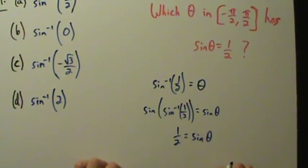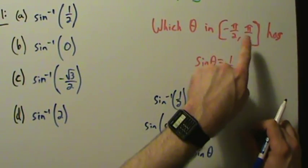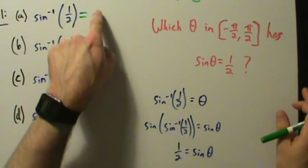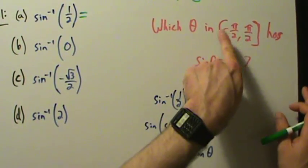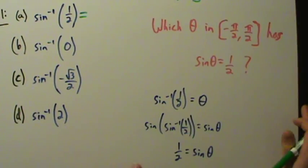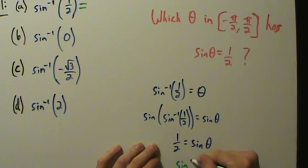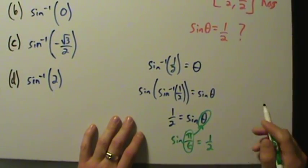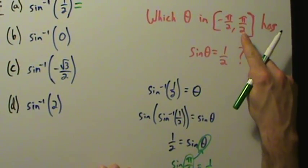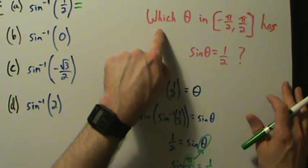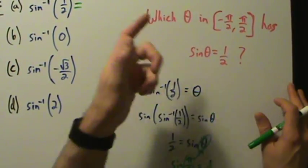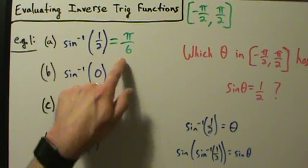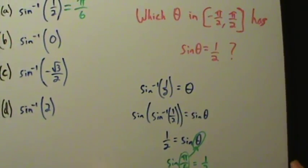There are infinitely many angles theta whose sine is one half, but there's only one such angle in the interval from negative pi over 2 to positive pi over 2 — that's the range of the inverse sine function. Going back to the unit circle, sine of pi over 6 is one half. Pi over 6 is between negative pi over 2 and positive pi over 2, and sine of pi over 6 is one half. So the answer to part A is pi over 6. Inverse sine of one half equals pi over 6.